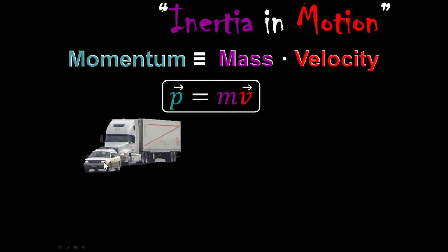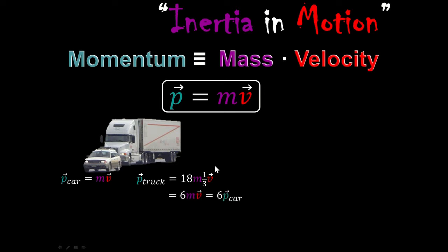Let's look at the car and the truck. If the car had some mass m and some velocity v, but the truck had 18 times as much mass and one-third as much velocity, we can quantify how much momentum it has. 18 times one-third reduces down to 6, so the truck would have six times as much momentum as the car. It's not just how much mass or just how much velocity — it's the combination of those two.